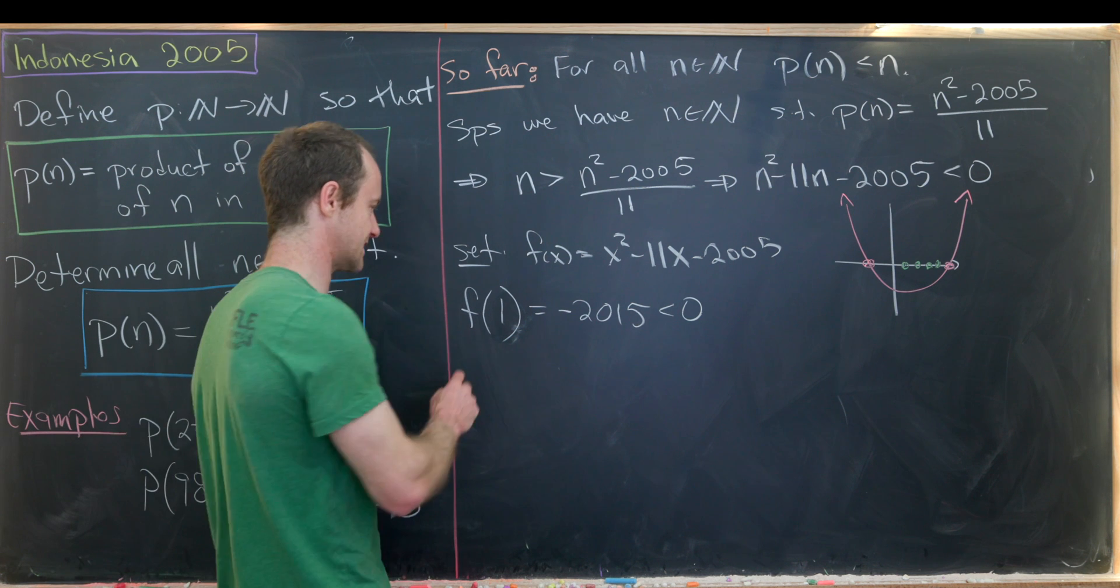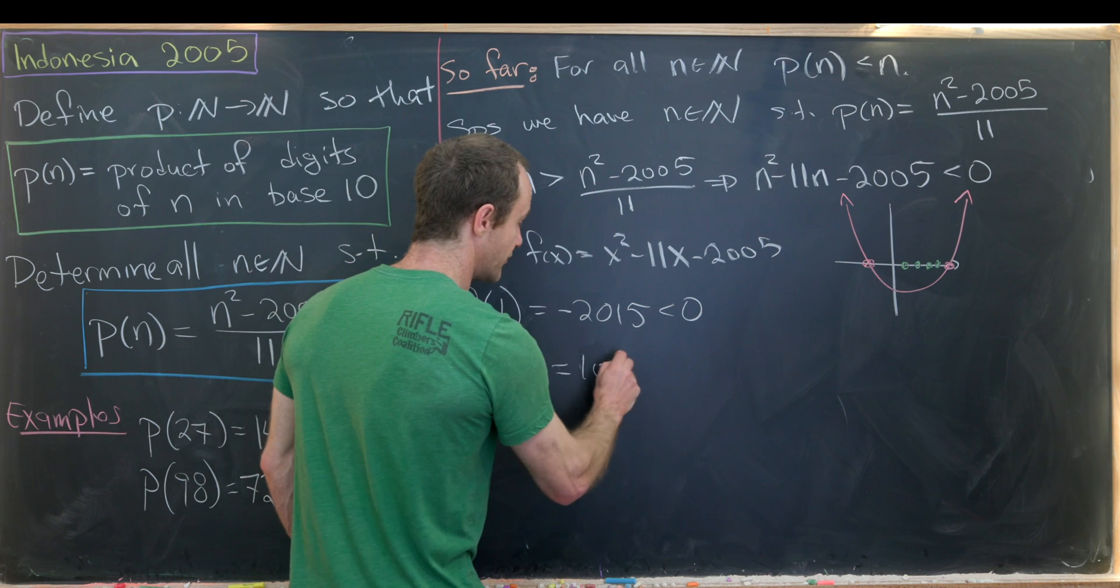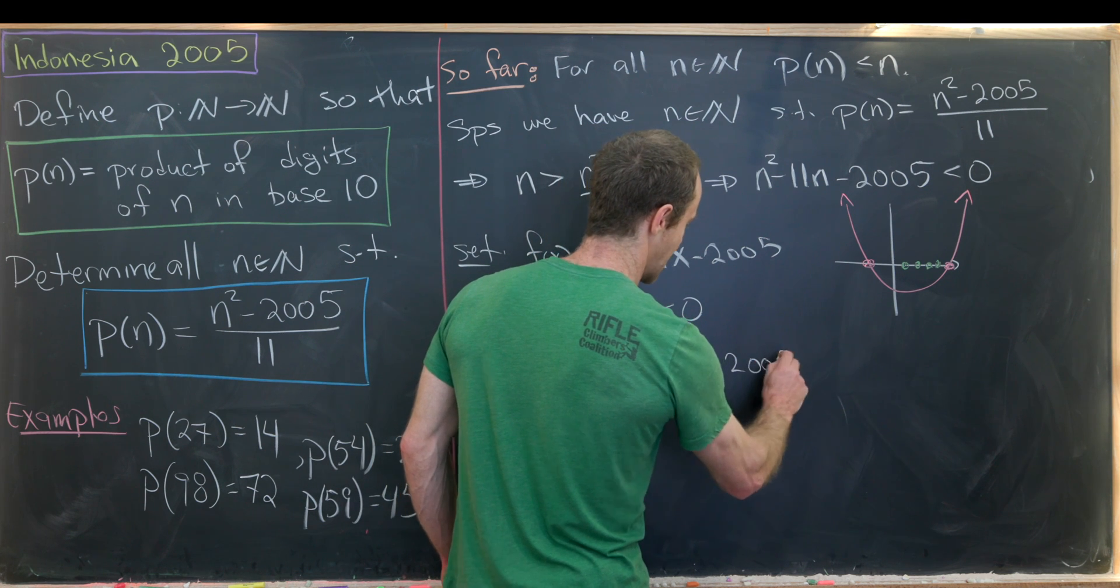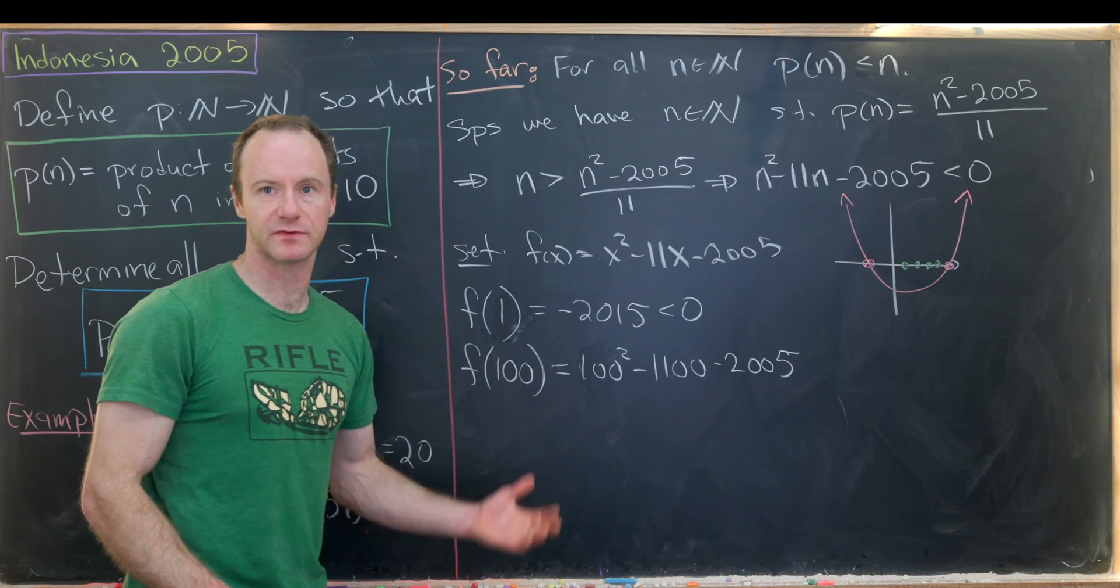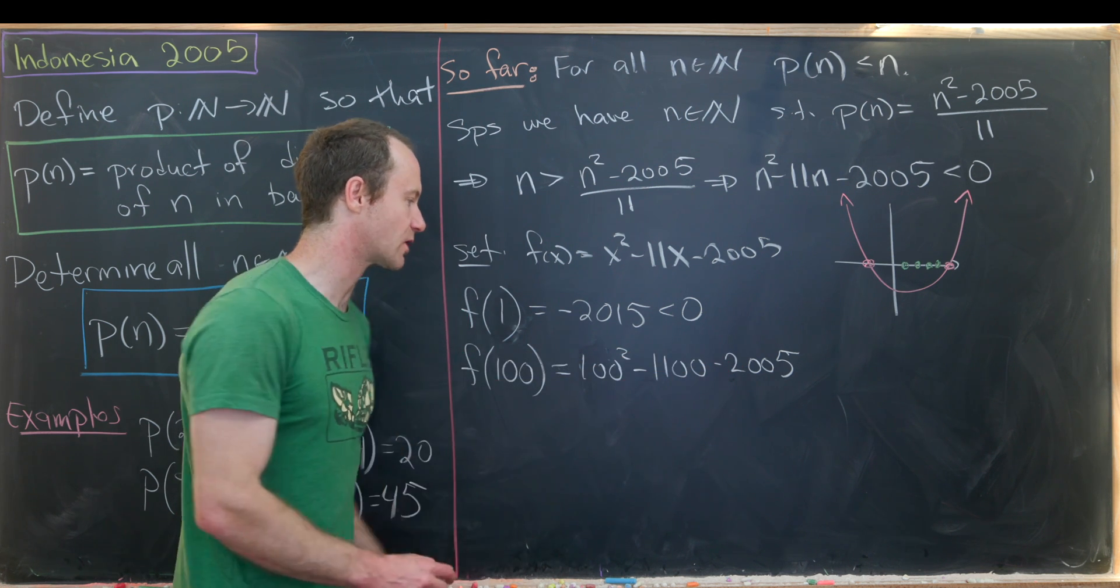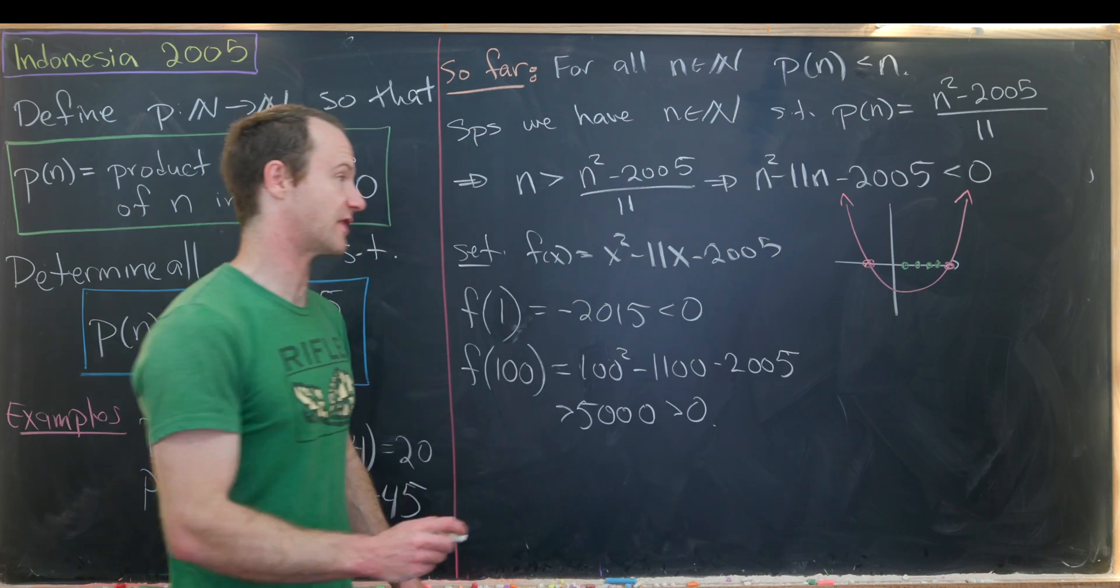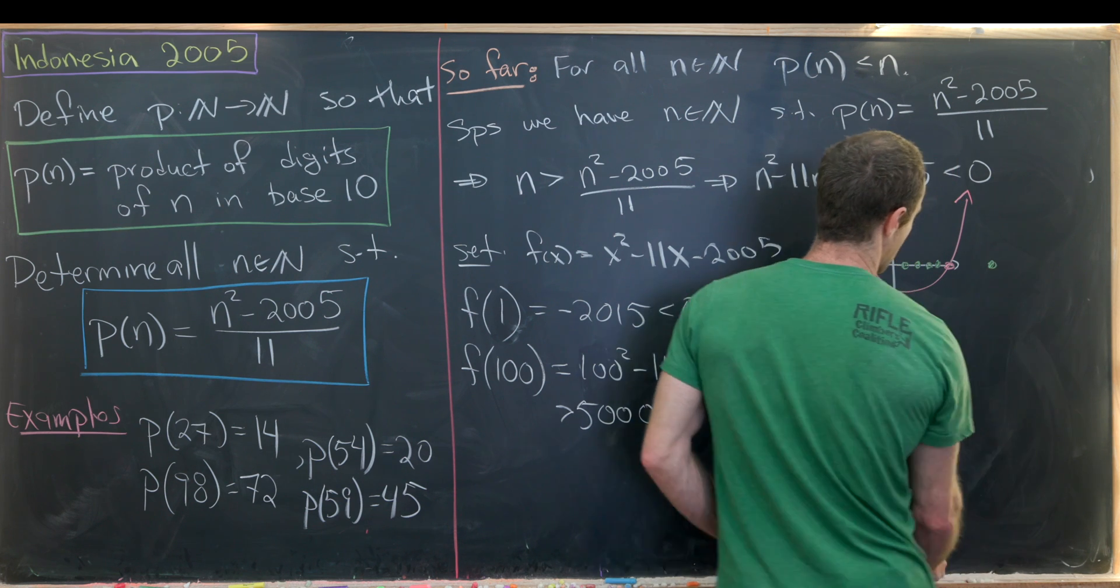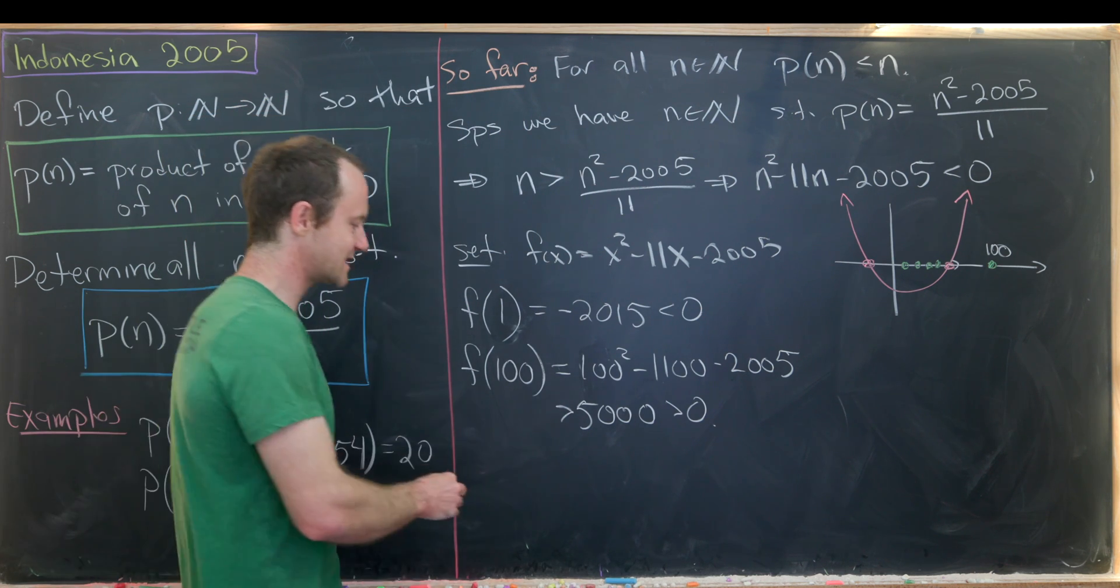Notice that if we evaluate f at 100 we get 100 squared minus let's see that's going to be 1100 minus 2005. So 100 squared is 10,000 and then we can make replacements of these with larger numbers and still end up bigger than 0. So maybe we'd replace this with 2000 this with 3000. So that's a total of 5000. So this is going to be bigger than 5000 which is itself bigger than 0. So that means the number 100 is way out here in the portion where that parabola is above the x-axis.